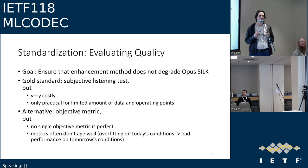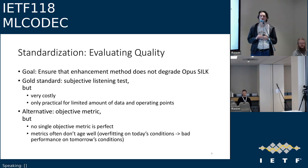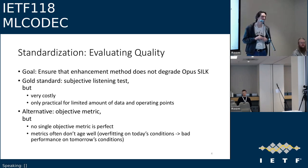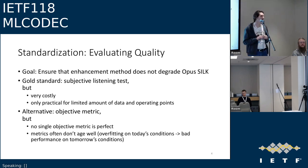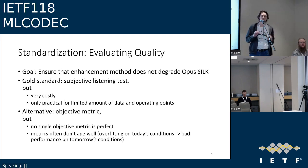We now have two methods, so we can start looking into quality evaluations. The general goal is to make sure an enhancement method does not degrade Opus SILK. The gold standard is a subjective listening test, but that is costly and can only test a limited amount of data. The alternative is objective metrics, which are cheap but imperfect — they tend not to age well, and yesterday's methods often fail to assess quality accurately when new degradation types appear.